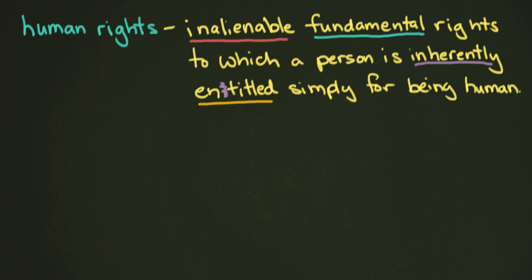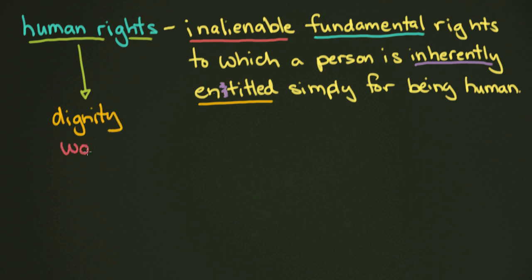Now, where does this idea come from? Really, all of this is founded on two ideas: one is dignity, and the other is worth. In a way, you can simplify this to the value of individuals and their right to live a dignified life. That is sort of the way we define and understand human rights today.